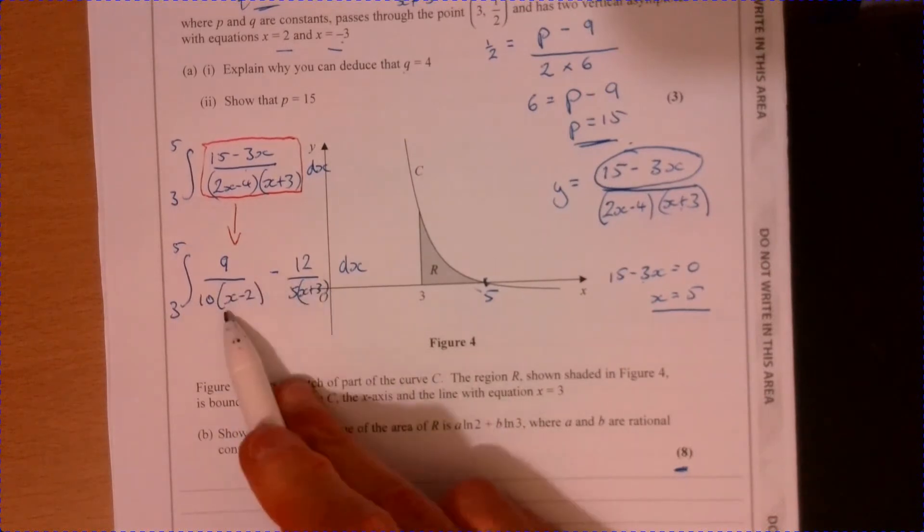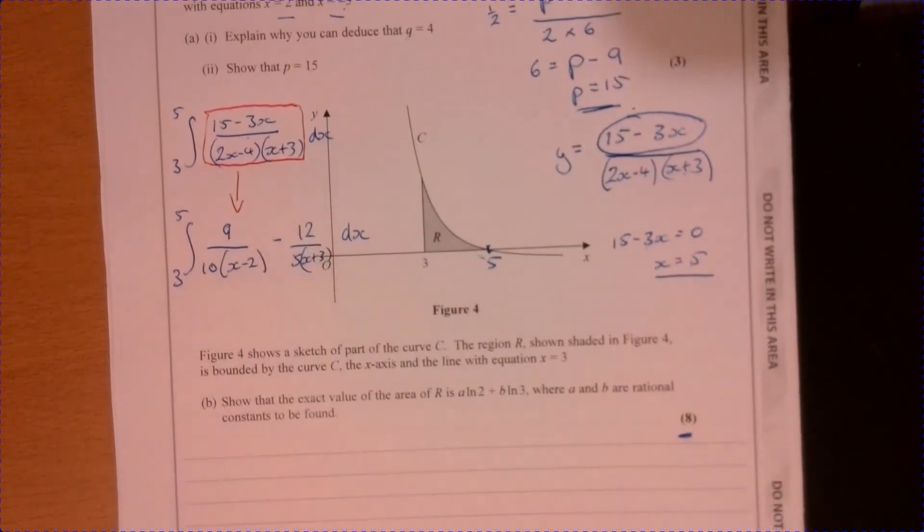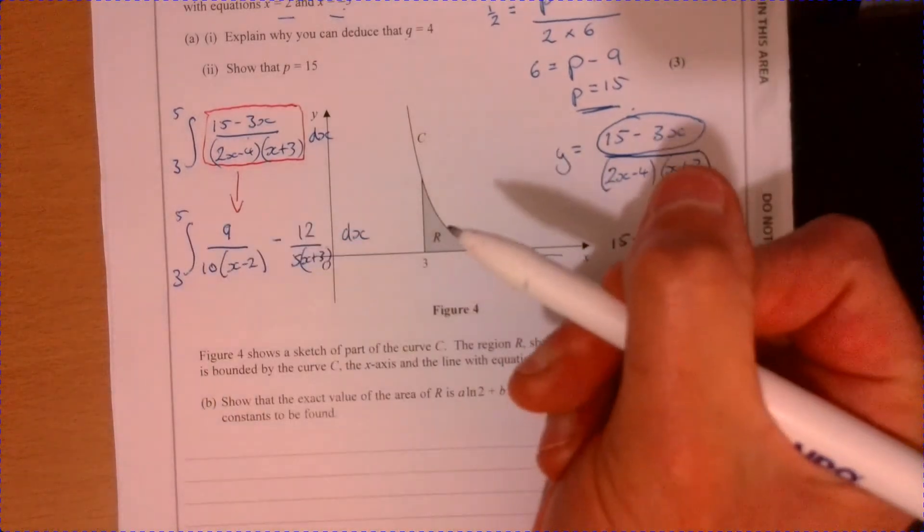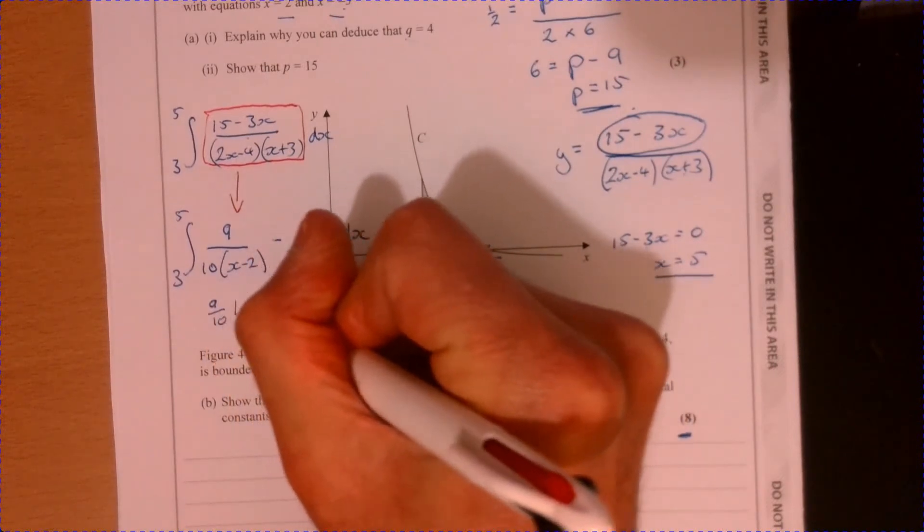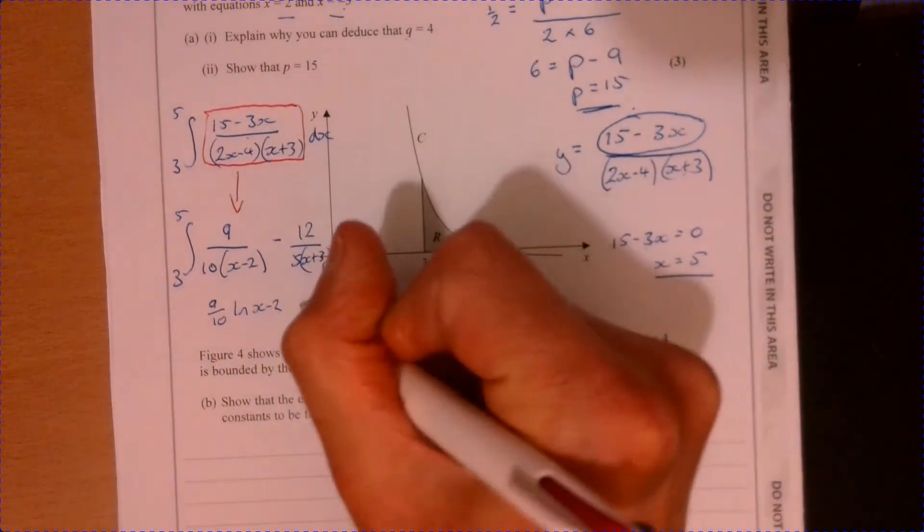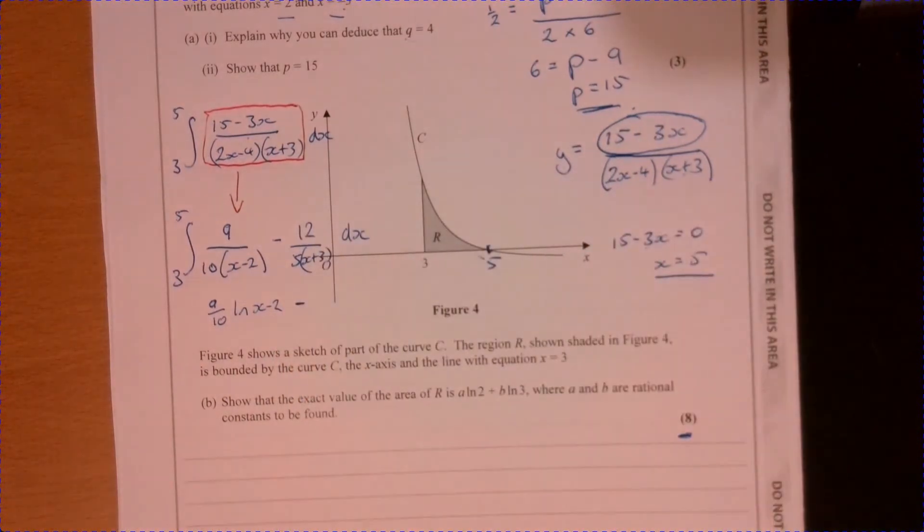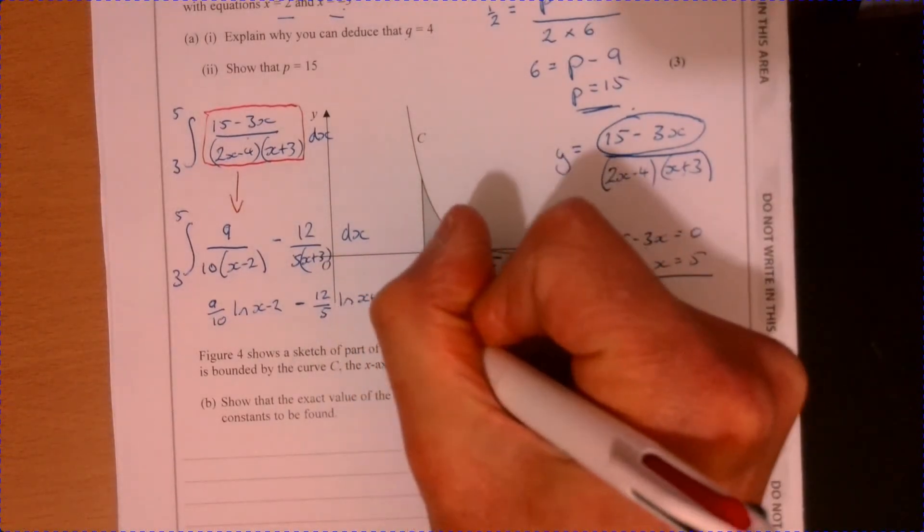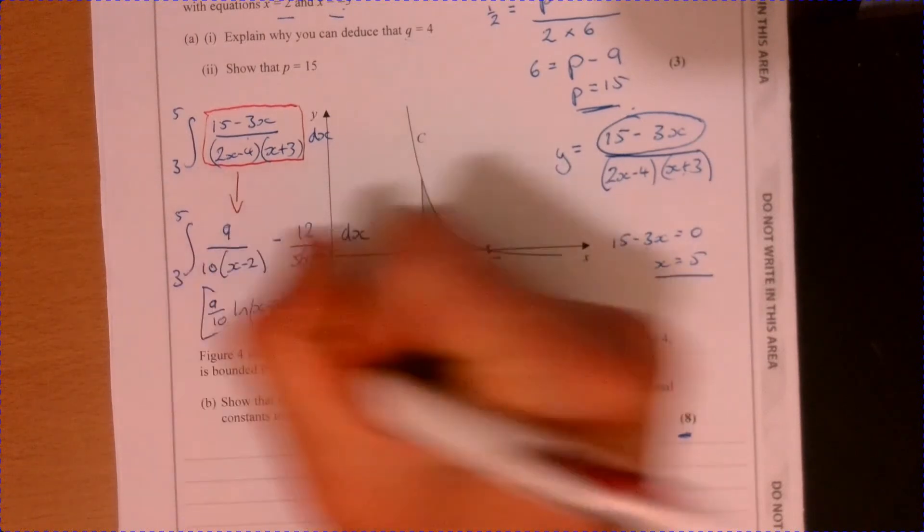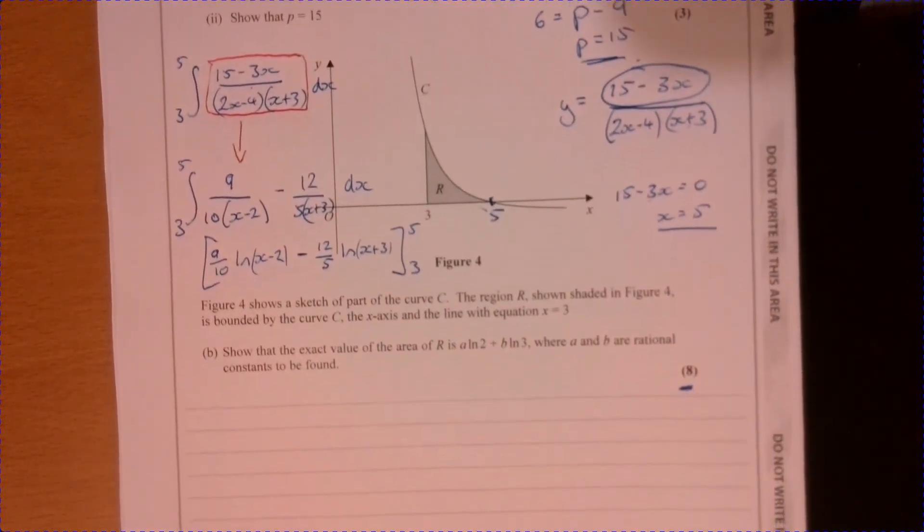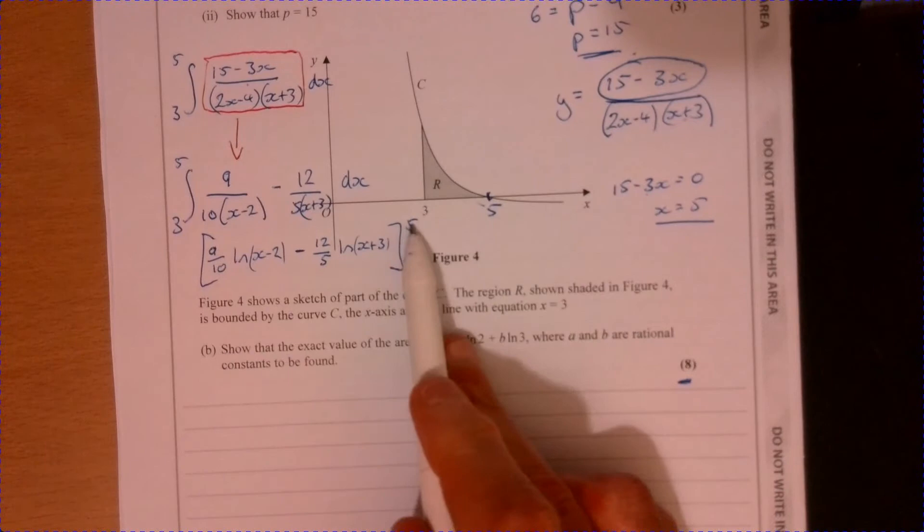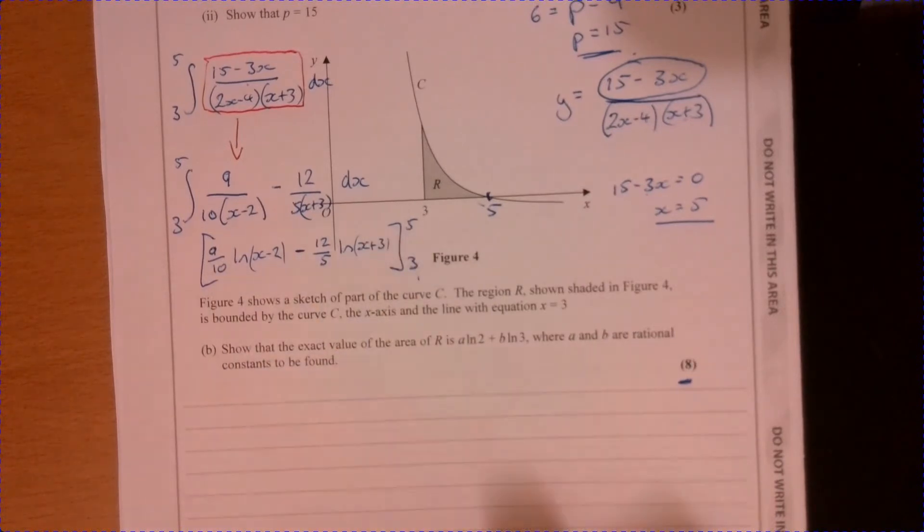Now I can do this bit. So if I integrate this, obviously I would be writing this on the rest of my page. I'm only writing it here just so you can kind of see it next to the question. So if we integrate this, it's going to be 9 tenths ln(x minus 2) take away 12 fifths of ln(x plus 3). And then we just need to feed in the limits of 5 and 3. And the easiest thing to do at this stage is just to write the thing out. Let's just stick 5 in, stick 3 in, see what that gives us.